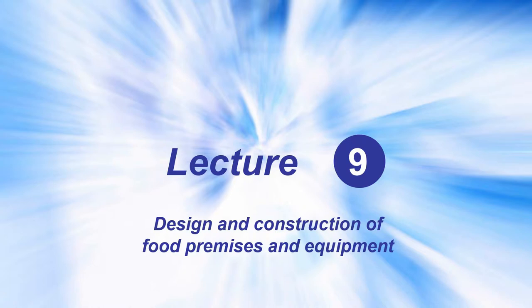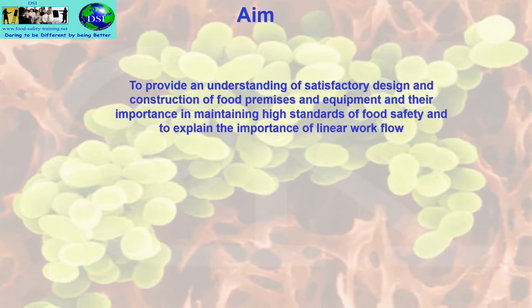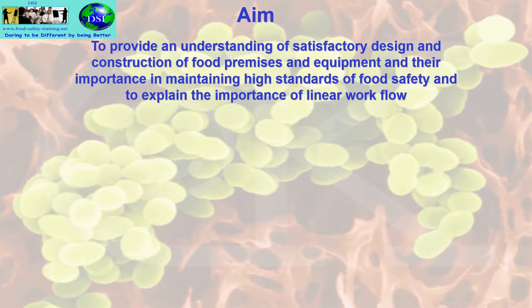Lecture 9 covers the design and construction of food premises and kitchens, and catering equipment. The aim of this unit is to provide an understanding of satisfactory design and construction of food premises and equipment, and the importance of maintaining high standards of food safety and explaining the importance of linear workflow.